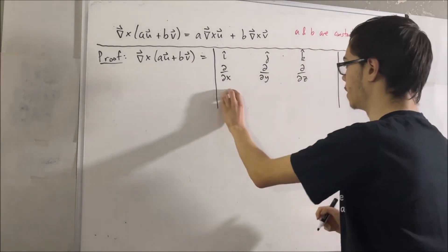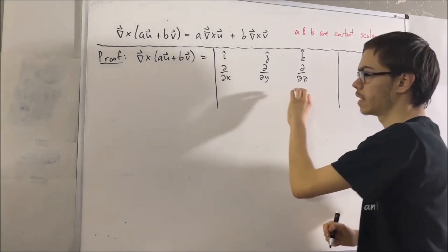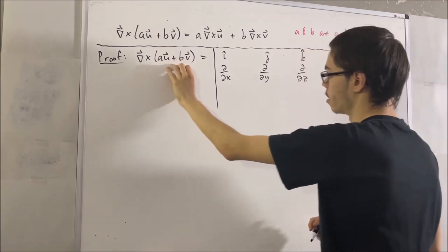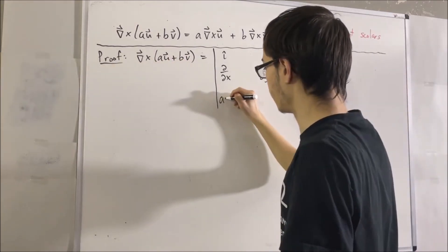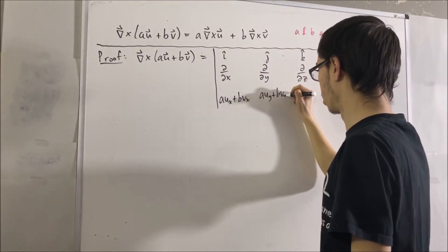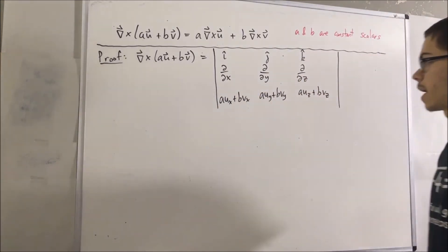And in the final row, that will contain the i, j, and k components of this vector. For the first one, it's a ux plus b vx, and so on. Just like that.